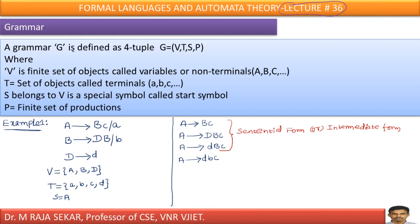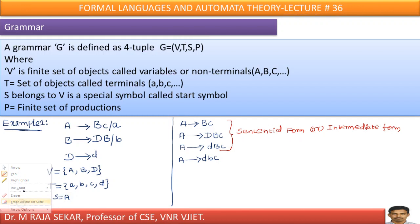A grammar G is defined as a four-tuple (V, T, S, P). V means variables or non-terminals — they are designated by capital letters. T means terminals — small letters that cannot produce anything. S belongs to V and is the starting symbol. P is a finite set of productions.